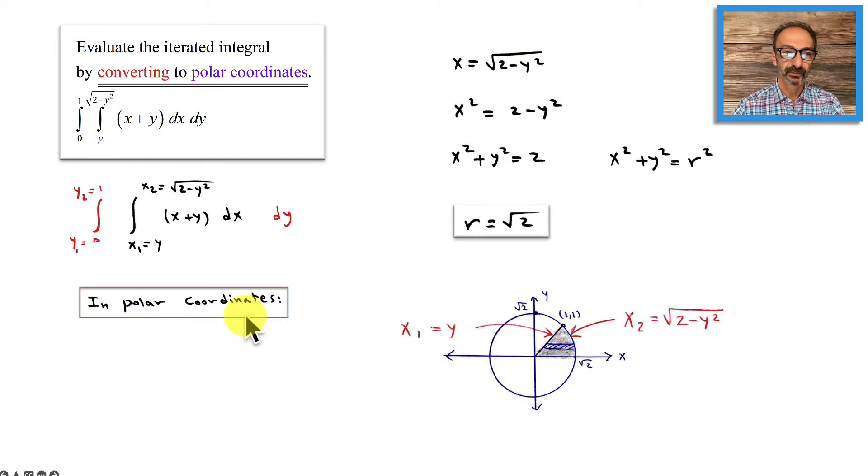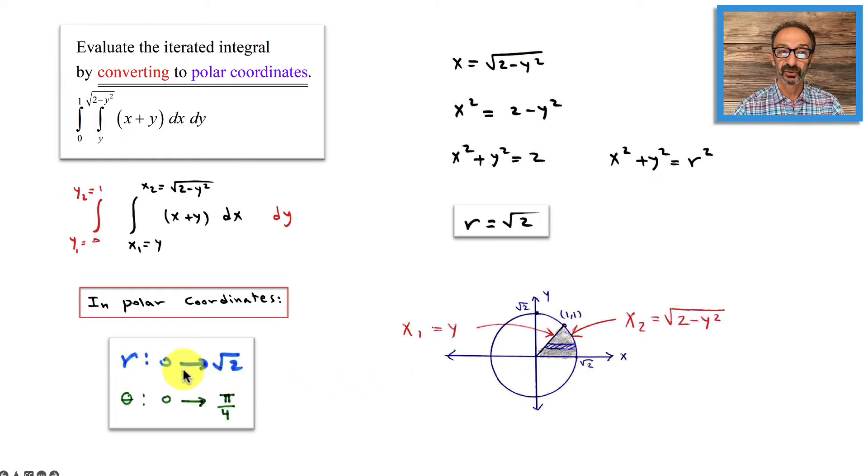In polar coordinates, what do we have? What do we know about r? r goes all the way to square root of 2, changes from 0 to square root of 2. And theta doesn't go all the way around; it goes from here to here, and y equals x makes a slope of 1, that's a slope of 1, rise 1 and run 1, which is a 45 degree.